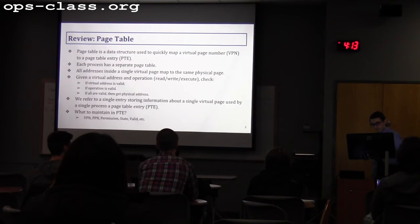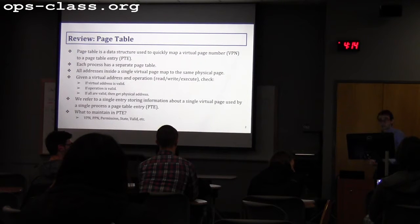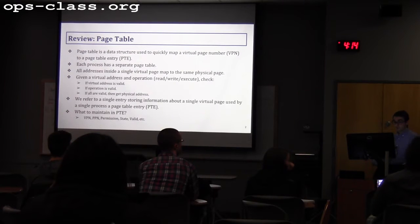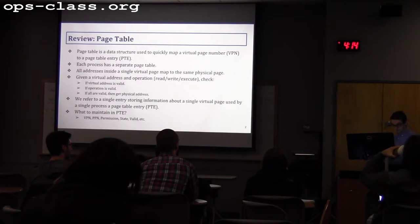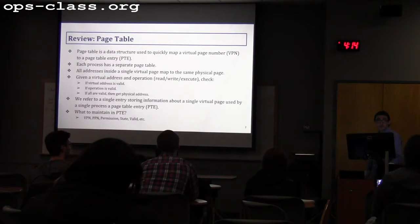What should we keep in a page table entry? It depends on your data structure. You might need to keep the virtual page number, but you need to keep the physical page number, the permission of that page, the state (whether the page is on disk or in memory), whether the page is valid — meaning a physical page is allocated for it — and a reference bit indicating if that page has been recently referenced.